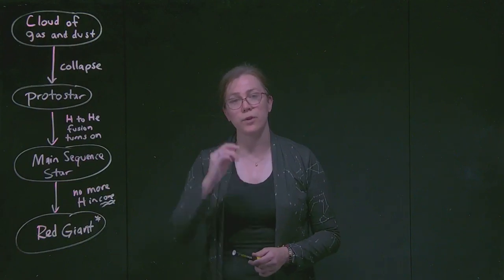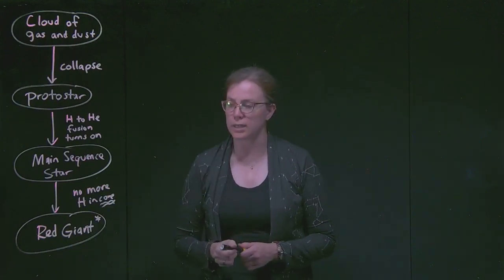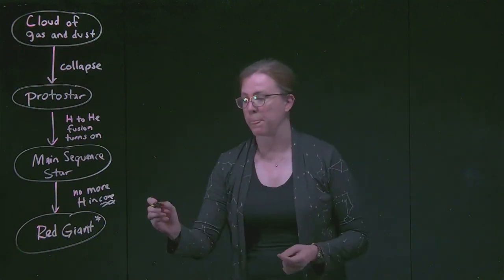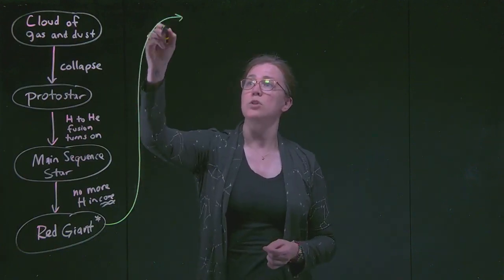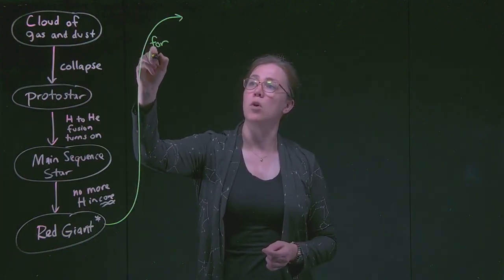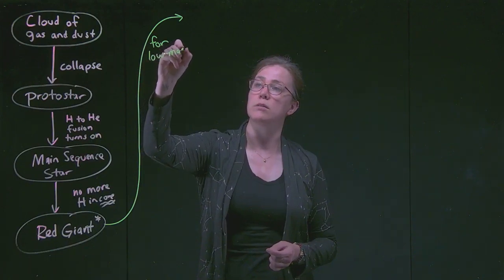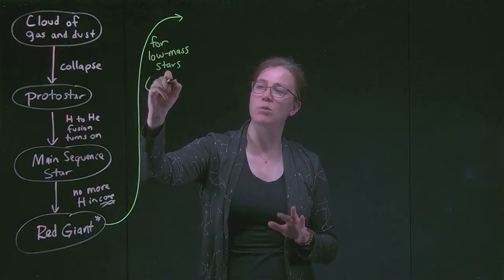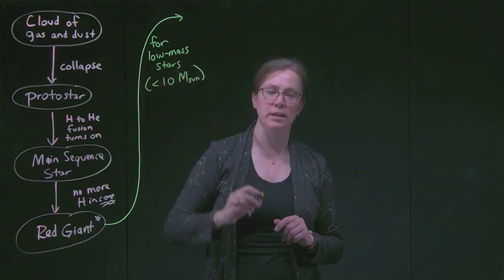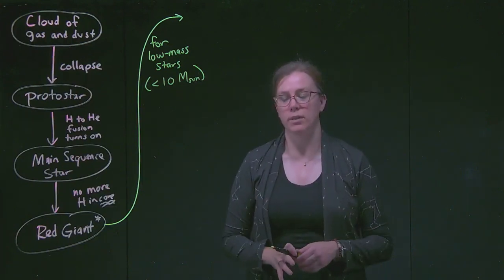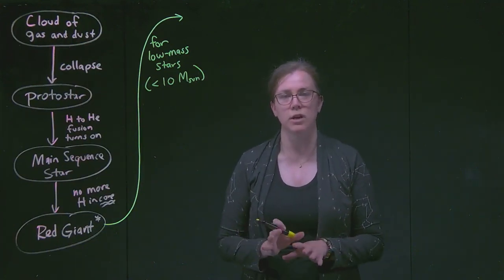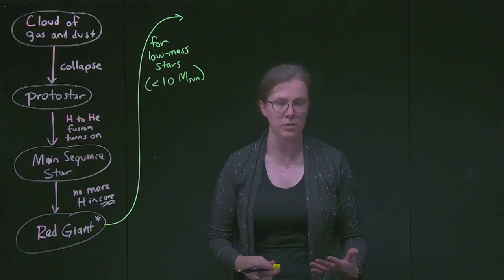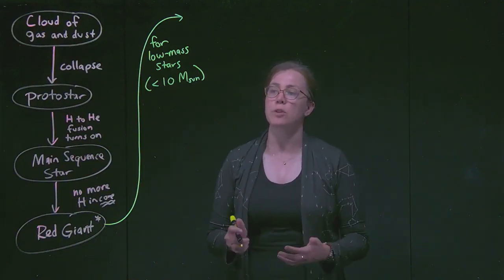Now, from there, two different things can happen. And I want us to recognize that those two different things are based on a star's mass. There's one possibility for low mass stars. For low mass stars, and we're going to call that less than about 10 solar masses, we want to recognize that that is a rounded value. The detailed physics gets into some technical details, and 8 to 10 is a common range that you'll see in textbooks. So we're rounding that number.